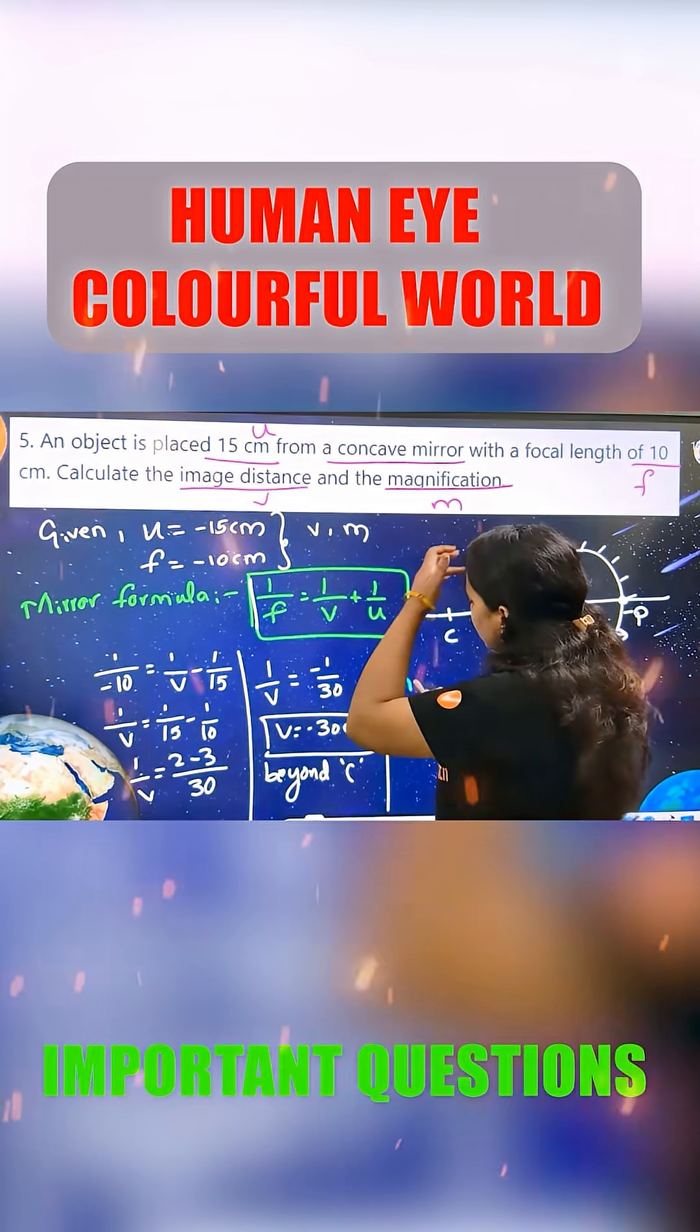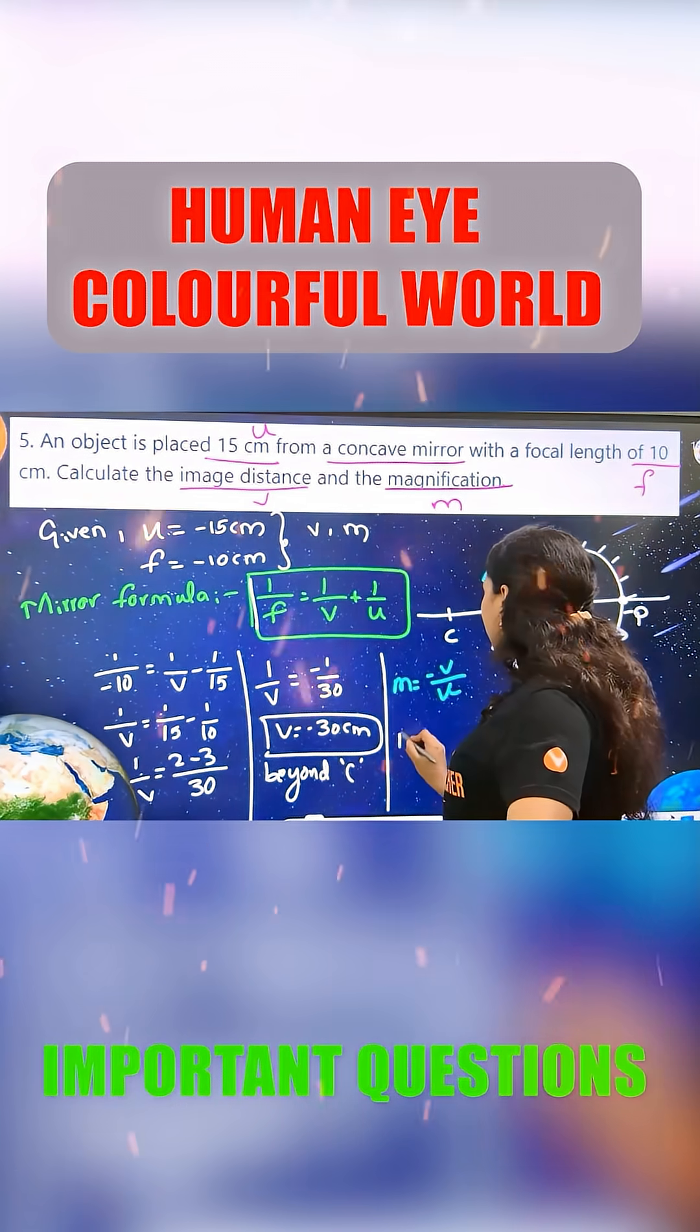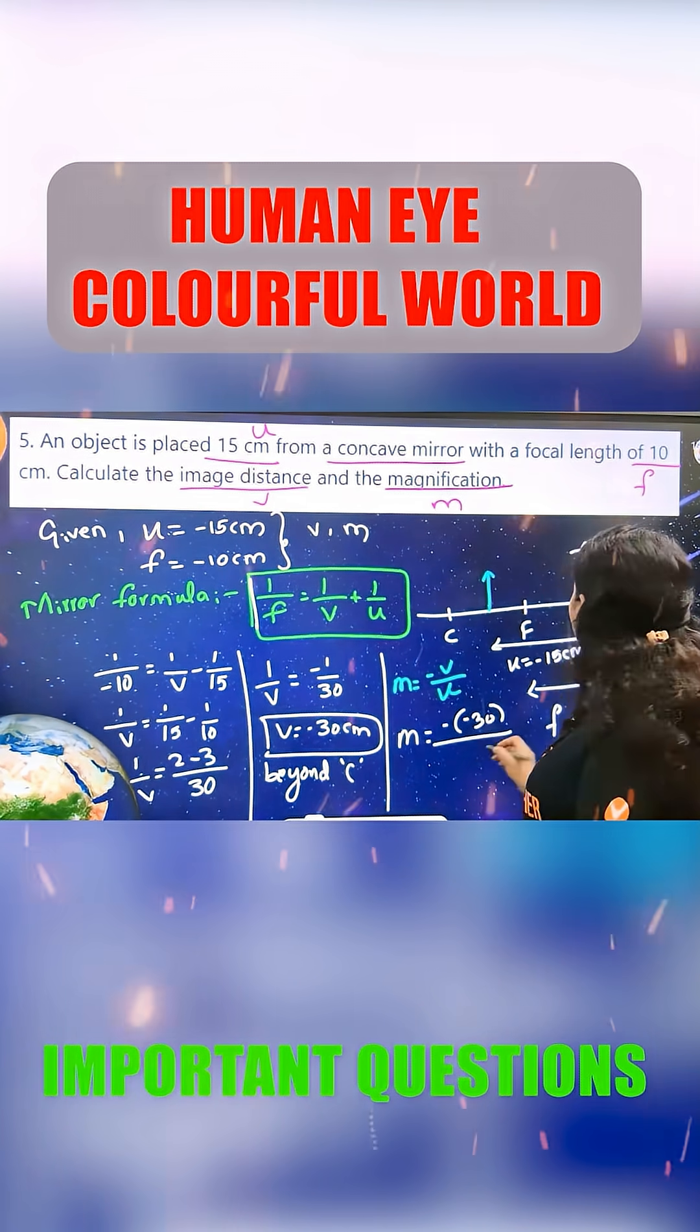Beyond the center form, M is equal to minus V by U. So M is equal to minus of minus 30. U is equal to minus 15.